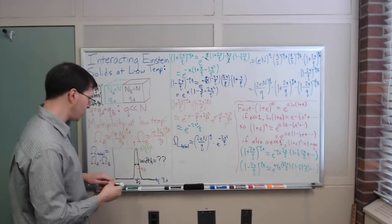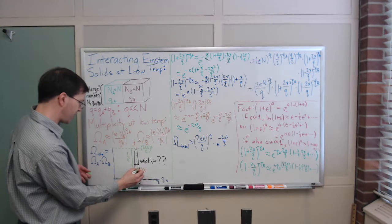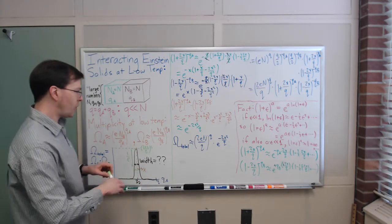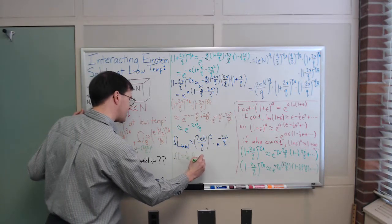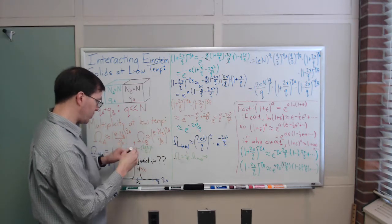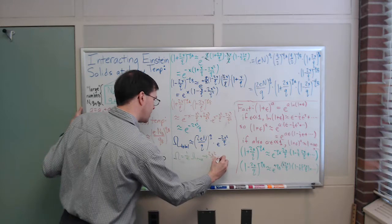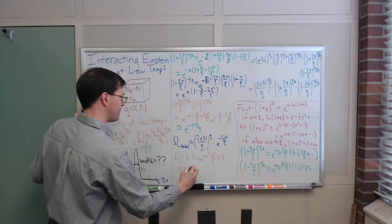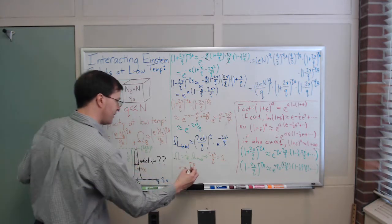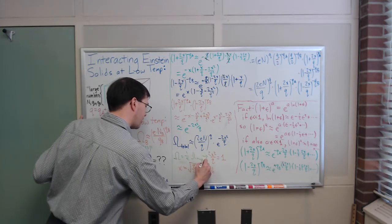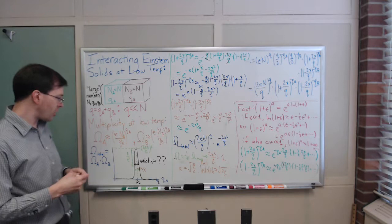To find the width, I ask: what is x when Omega drops to (1/e) of Omega_max? That requires e^(-2x²/Q) = e^(-1), so 2x²/Q = 1, giving x = sqrt(Q/2). The full width between the two 1/e points is about 2x = sqrt(2Q).